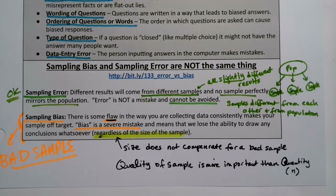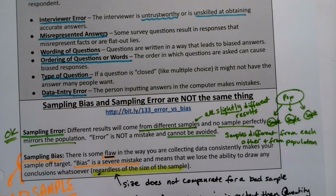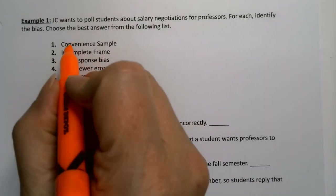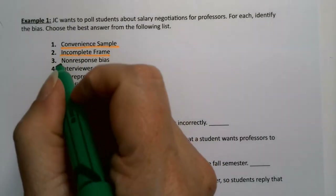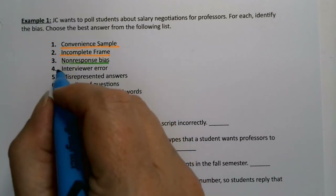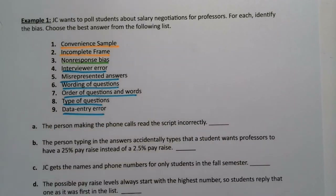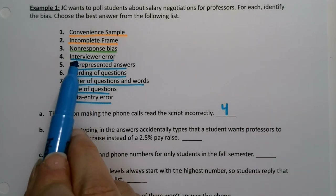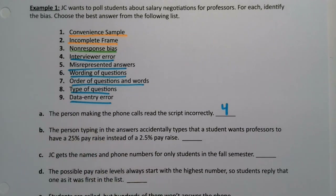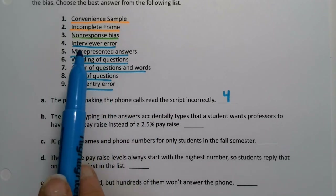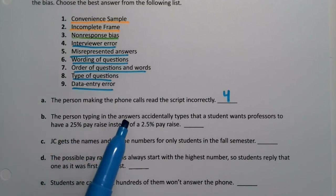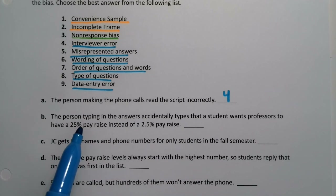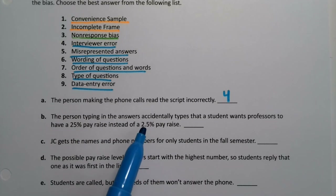It always helps to have examples to attach our definitions to. We're going to apply all the different kinds of errors. First: a person making the phone calls reads the script incorrectly — that is interviewer error. The interviewer is not doing what they should be doing. Second: the person typing in the answers accidentally types that a student wants professors to have a 25% pay raise instead of a 2.5% pay raise — that's data entry error. The person typing it in just loses a decimal point accidentally.